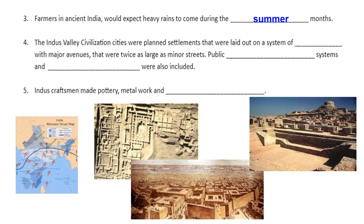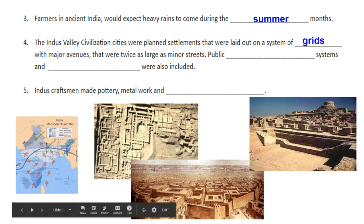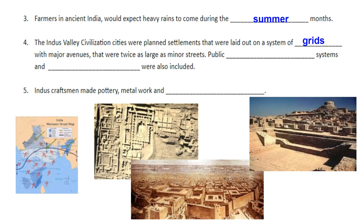The Indus Valley Civilization's cities were planned settlements that were laid out on a system of grids with major avenues that were twice as wide as minor streets. Below here we have a kind of satellite image of one of the old Indus Valley civilizations, and you can see where my cursor is running — that would be like a major avenue, and then our side streets here would be much narrower than the main avenues.